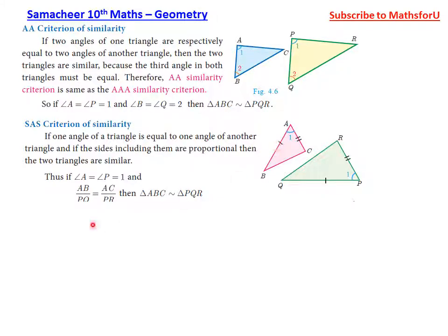Another property for similarity is the SAS property: if angle A equals angle P, and AB/PQ equals AC/PR, then triangle ABC is similar to triangle PQR. This is the SAS (Side-Angle-Side) property.